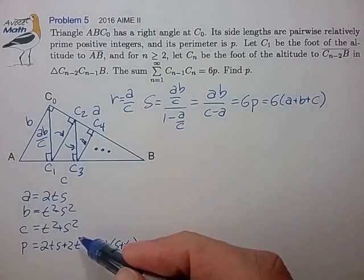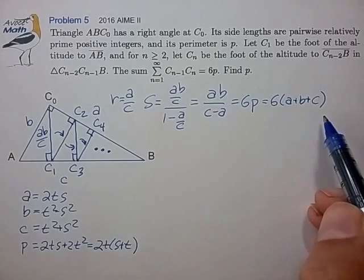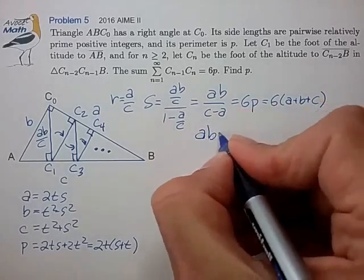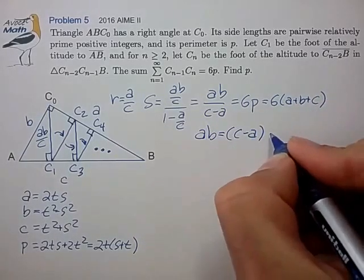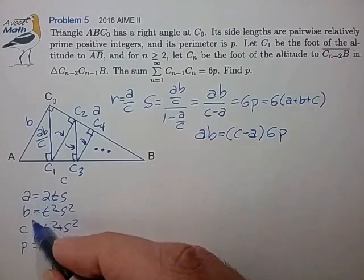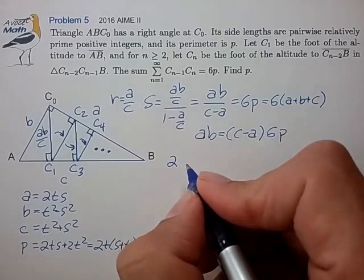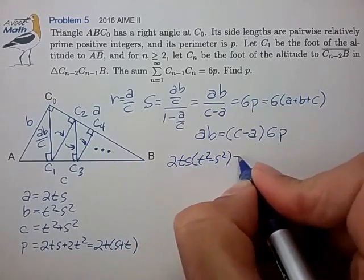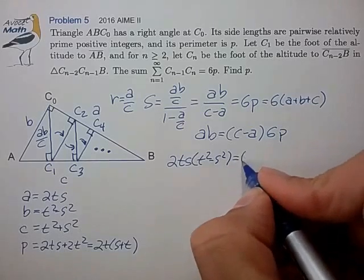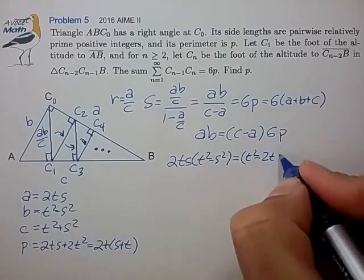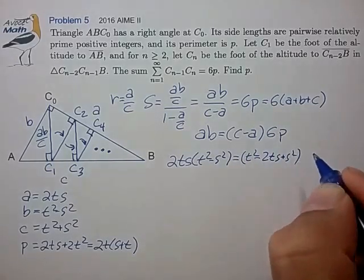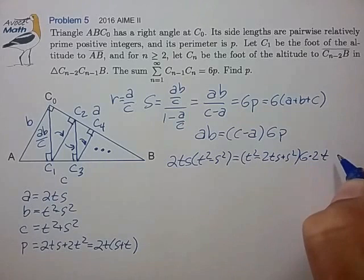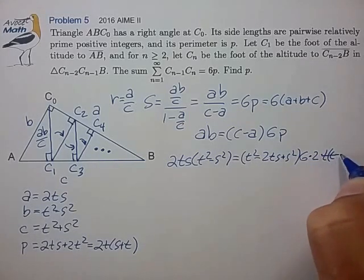Great, so let's see if we can use these expressions in our original equation here. Let's multiply both sides of the equation by C minus A, and let's plug in these values for ABC and the perimeter. So that's 2TS times (T² - S²). C minus A is T² - 2TS + S².